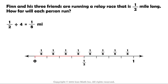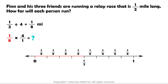To check our answer, we can multiply our quotient, one-eighth, by our divisor, four. The product of one-eighth and four should equal our dividend, one-half. We rewrite four as four over one so that we can perform fraction multiplication. We have one-eighth times four over one. Now we multiply the numerators: one times four equals four. And the denominators: eight times one equals eight. So the product equals four-eighths.